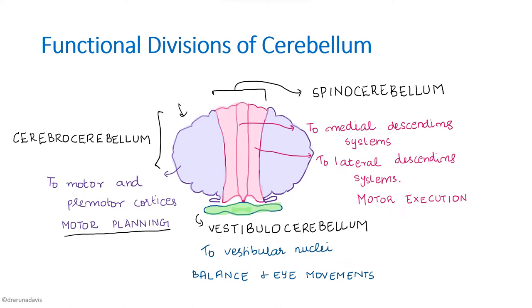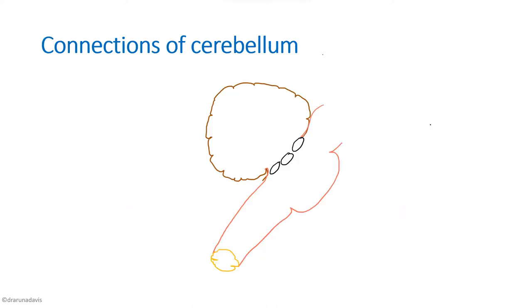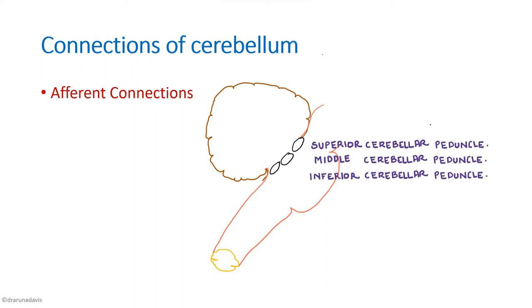Now let us see the connections of the cerebellum. All afferent and efferent connections travel through three peduncles: the superior cerebellar peduncle, the middle cerebellar peduncle, and the inferior cerebellar peduncle. All inputs as well as outputs pass through these three peduncles.